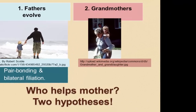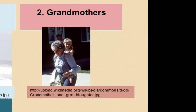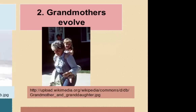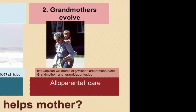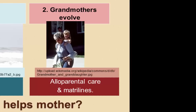Something else distinctive about humans is the long post-menopausal life of human females. The second hypothesis is that grandmothers evolved to help their daughters with the care of grandchildren. This too is tied to characteristics of human social organization, including the tendency towards alloparental care — particularly by related women: sisters, aunts, and mothers — and the formation of matrilines, which are multi-generational groupings of related women.